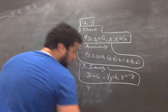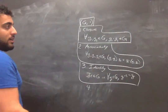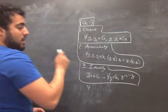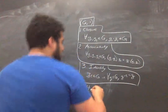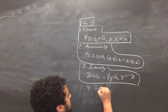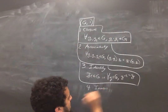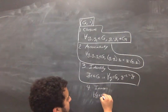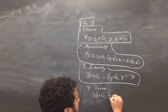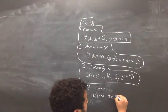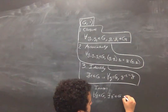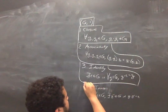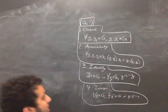And then number four, the final criterion for a group, is that inverses exist. Every element has an inverse, which is defined as an element which, when you combine them using this operation, you get the identity. What it says is that for every element G in big G, there exists some other element — we'll call it G inverse — which is also an element of big G, such that G times G inverse equals E. And that's all we have. If something meets these four requirements, it's a group.